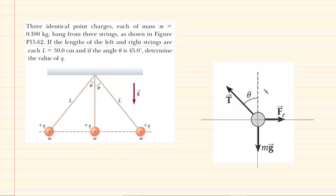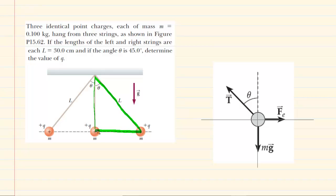This is the basic free body diagram for the rightmost charge. The next thing we need to figure out are the distances from each of the other charges to this charge. We can figure out those distances by exploring a right triangle. We can see that triangle has an angle labeled theta, and the length of the string is L. We're going to try to figure out the horizontal distance, which for now we'll call X.